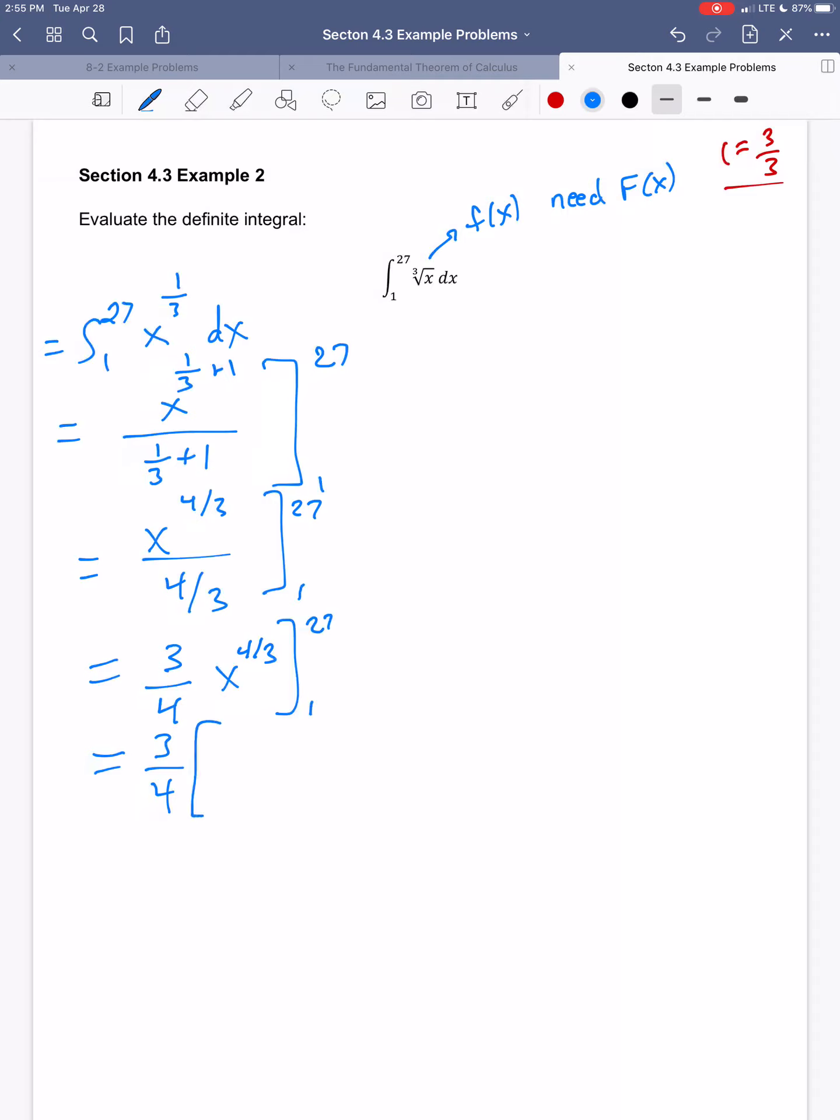I can just do it like this. So then I'm going to get 27 to the four-thirds minus 1 to the four-thirds.